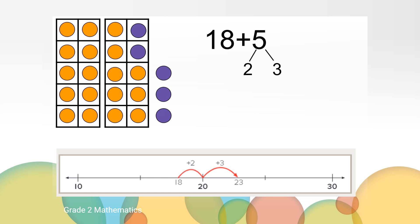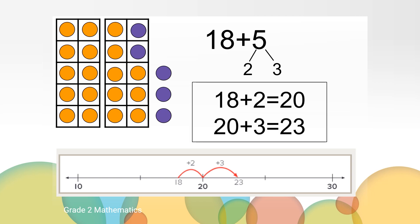Let's see what this making 10 strategy would look like with number sentences. I know that the 5 can be broken into a 2 and 3. We started with 18 and added 2 more because that got us to the friendly number 20. And then we needed 3 more left from the 5 to make 23. Mathematicians can use different tools to represent their math thinking and strategies. We used a make 10 strategy to solve this problem and we showed this strategy in 3 different ways: with 10 frames, a number line, and with number sentences.